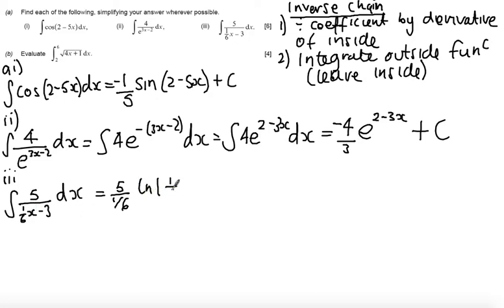Log of that inside function, so 16x minus 3. And just tidy this up first of all, so flip the fraction upside down and multiply by it. I get 5 sixths log of 16x minus 3, and don't forget your constant of integration at the end there.